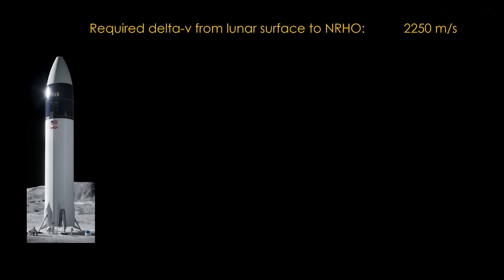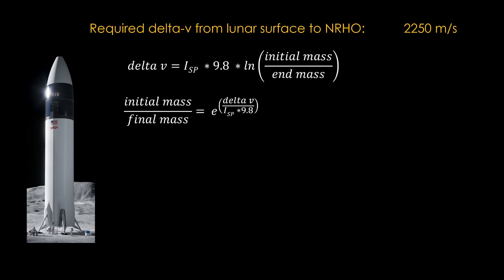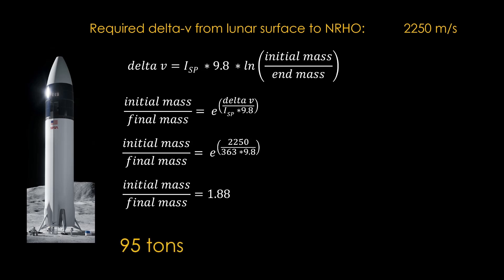The required delta-v to get from the lunar surface to a 100-kilometer orbit is about 1,800 meters per second, and getting to near rectilinear halo orbit is another 450 meters per second, for a total of 2,250 meters per second. Here's the rocket equation. We refactor to solve for the mass ratio. Plug in the delta-v that we need, 2,250, and the specific impulse of the Raptor engine, 363, and we find out that the mass ratio needs to be 1.88. In our model, the dry mass is 95 tons, so to get that mass ratio we need 84 tons of propellant.